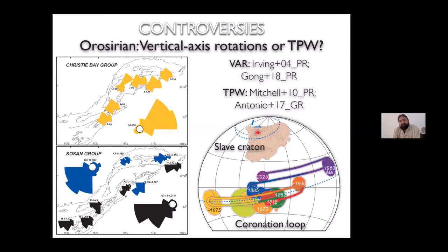Even farther back in time, in the Orosirian, during the age of the Nuna or Columbia supercontinent forming, there is a fascinating array of paleomagnetic poles. Ted Irving thought we could explain their dispersion due to vertical axis rotations locally. But if you look at paleocurrent measurements going up and down systematically along the basin axis, it's very hard to explain all the data through vertical axis rotation. I have preferred a true polar wander interpretation, and others working in Amazonia and other cratons have also seemed to find similar shifts.